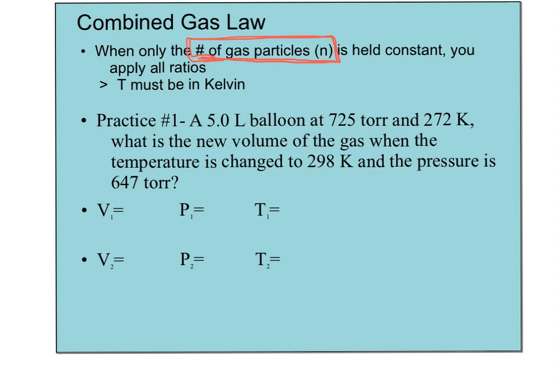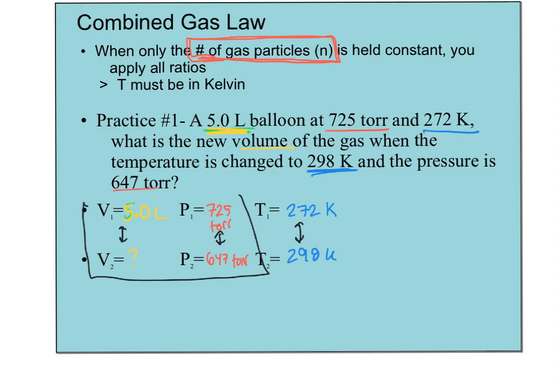Just watch this practice — don't write anything down. We have a 5-liter balloon at 725 Torr and a temperature of 272 Kelvin, already in Kelvin. What is the new volume if the temperature changes to 298 K and the new pressure is 647 Torr? Notice three things are changing, but we know what temperature and pressure are doing — we want to know what volume is doing. We'll treat this like two separate problems.